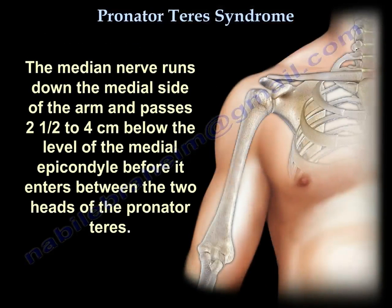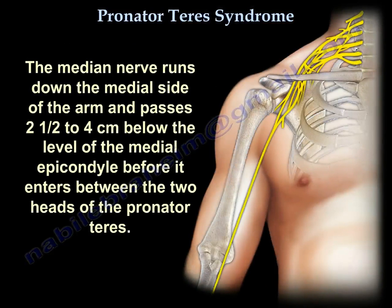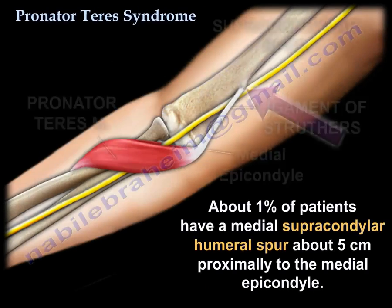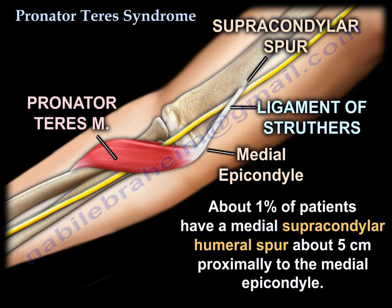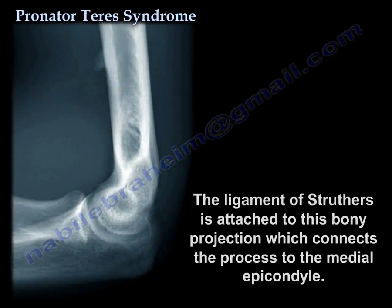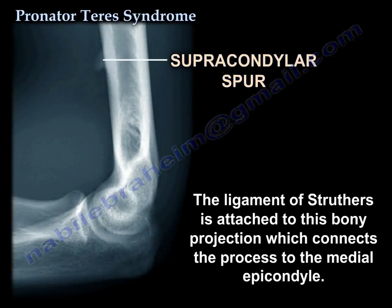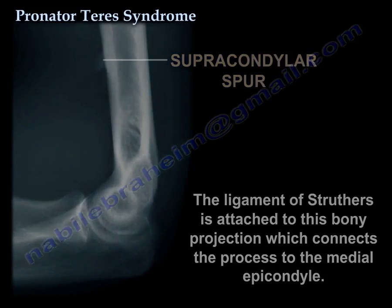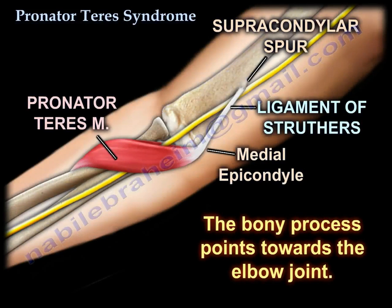The median nerve runs down the medial side of the arm and passes two and a half to four centimeters below the level of the medial epicondyle before entering between the two heads of the pronator teres. About one percent of patients may have a supracondylar humeral spur, about five centimeters proximal to the medial epicondyle. The ligament of Struthers is attached to this bony projection, connecting the process to the medial epicondyle, and the bony process points towards the elbow joint.